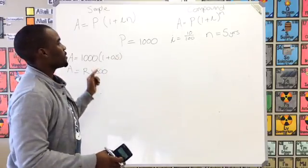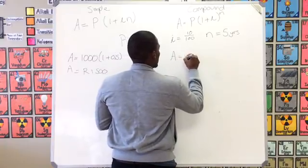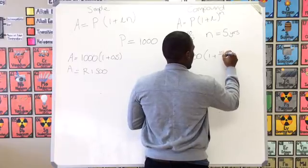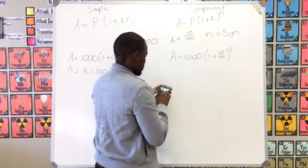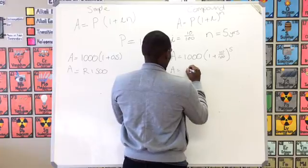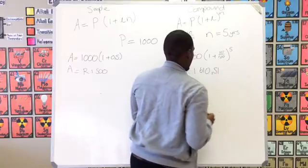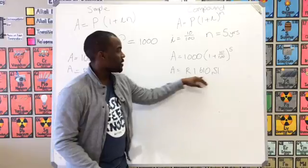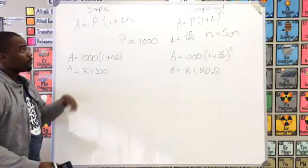Now let's look at the same transaction done in the compounded fashion: A = 1000 × (1 + 10/100)^5. That gives us one thousand six hundred and ten rand fifty-one cents. So you can see how with compound interest, whether it's a savings or loan situation, you always end up getting or paying more interest than with simple interest.